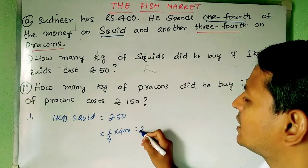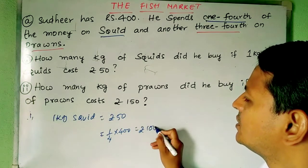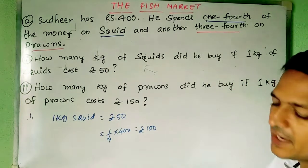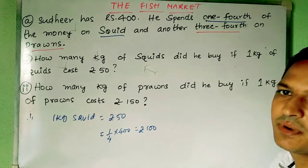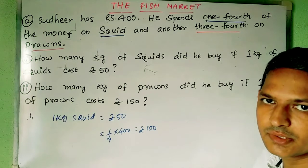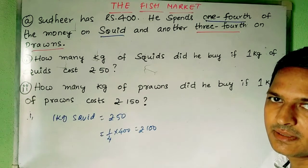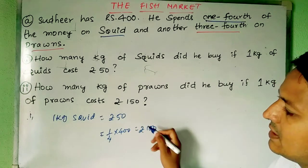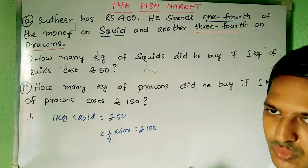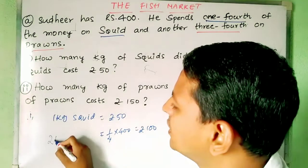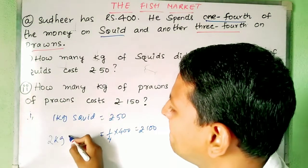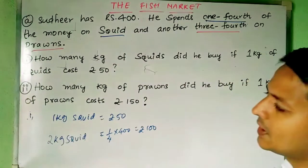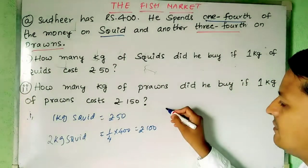So this is ₹100. If one kg is ₹50, for ₹100 how many kg will we get? That is what we need to solve. One kg is ₹50, and 100 is nothing but 50 twos. So you get 2 kg of squid for ₹100. That is the first part.